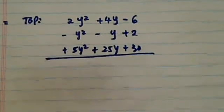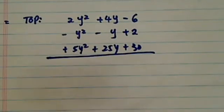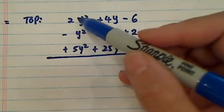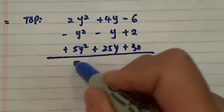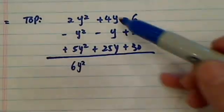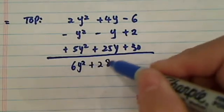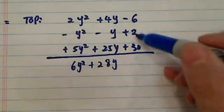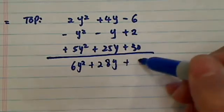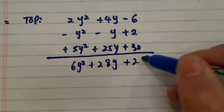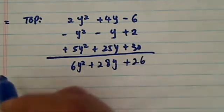Y squared terms go together, y terms go together, all the constants go together. From here I can easily see this is 1 plus 5, so I have 6y squared. This is plus 3 and plus 25, so I have plus 28y. And here's minus 4 plus this one, so I have plus, let's see, minus 4 plus 26.